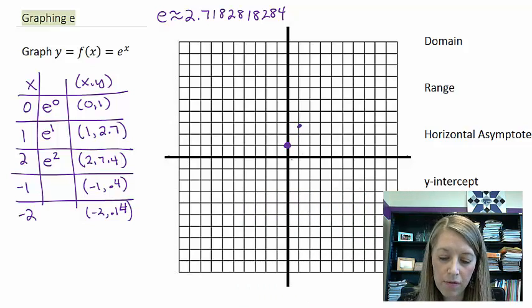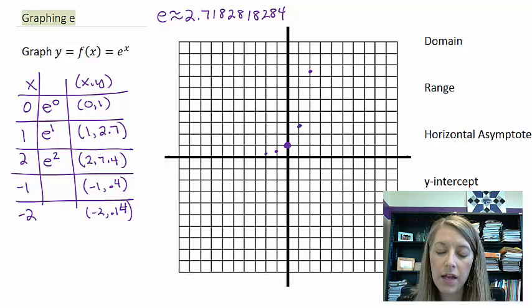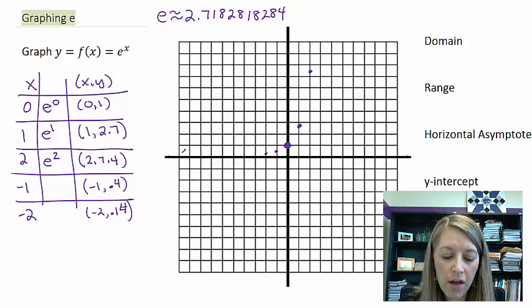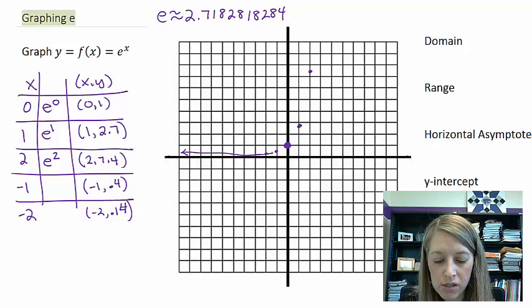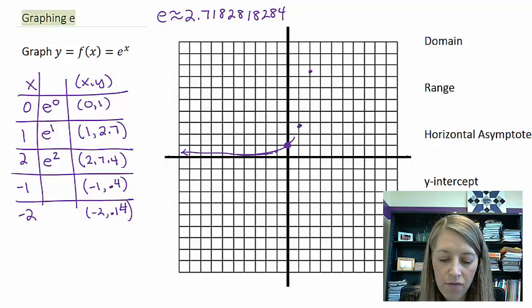And so I think if I plot all of these, I should have a good idea of what this graph should look like. And notice it takes the same shape as every one of our other exponential notations. And so here I have the graph of e to the x.